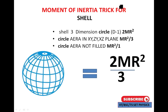Next: shell. A shell is a three-dimensional circle, so D minus 1 gives 2MR². Its circular area covers XY, YZ, and ZX planes — three planes — giving MR² by 3. The circular area is not filled, giving MR² by 1. Combining: first case 2MR², second case MR²/3, third case MR²/1. The total value equals 2MR² / 3.